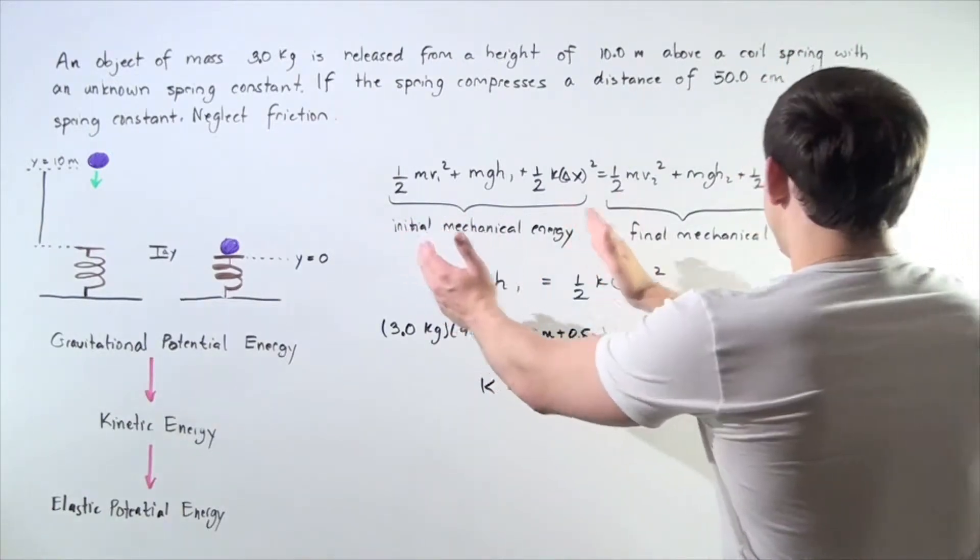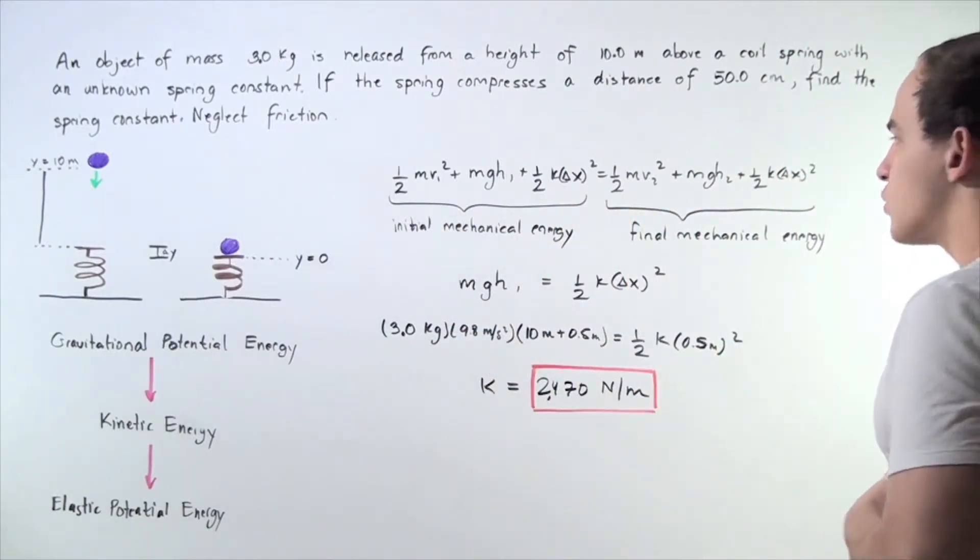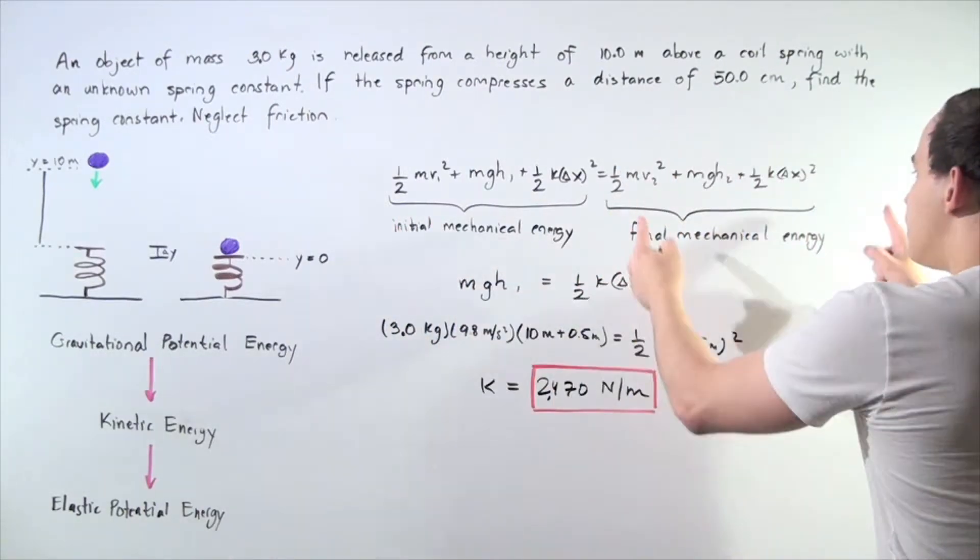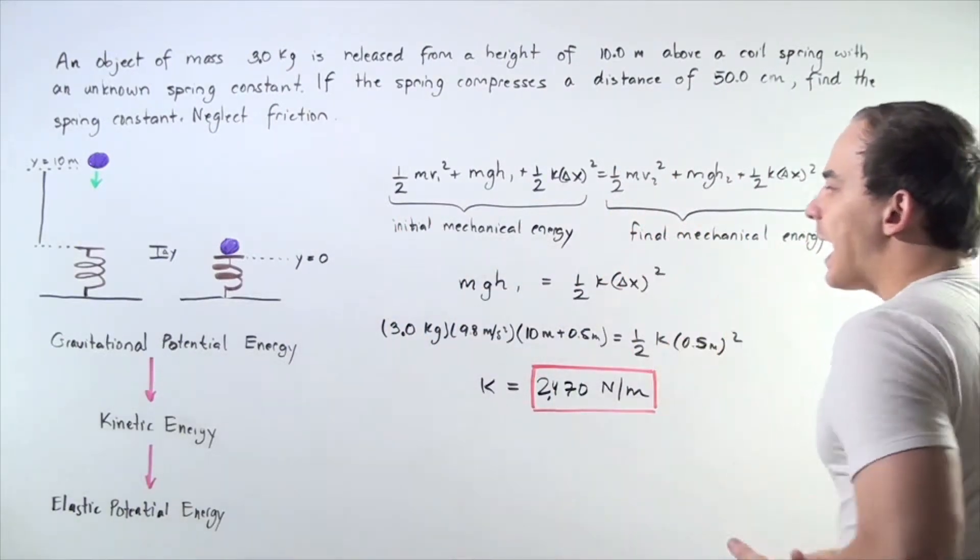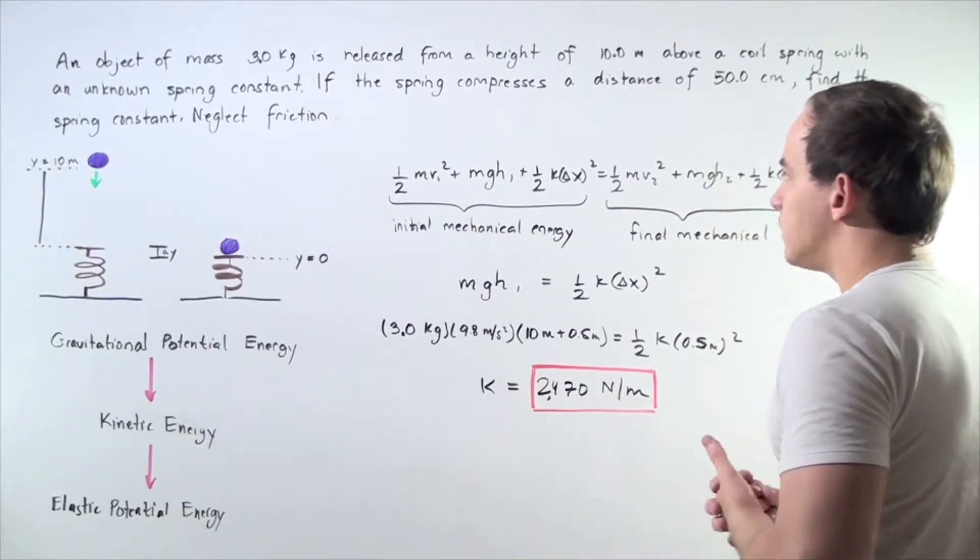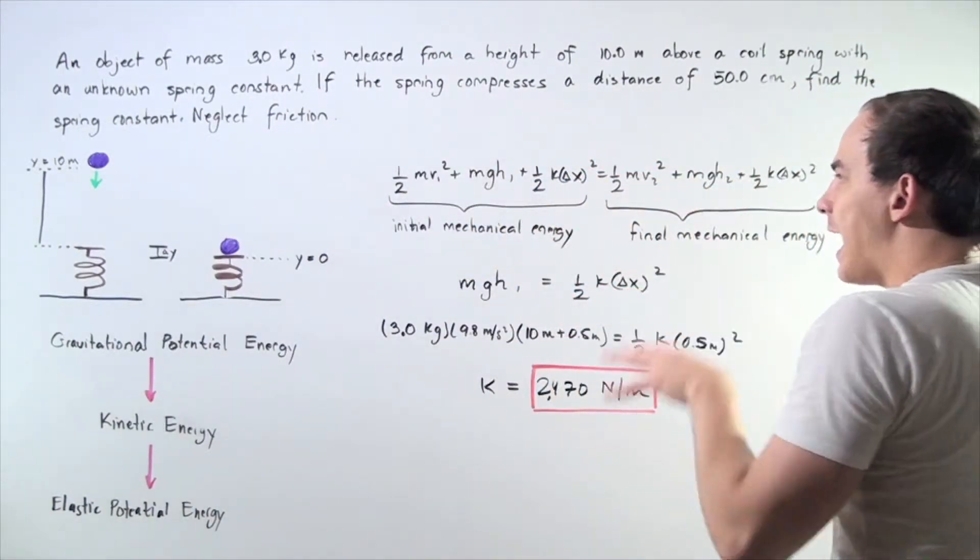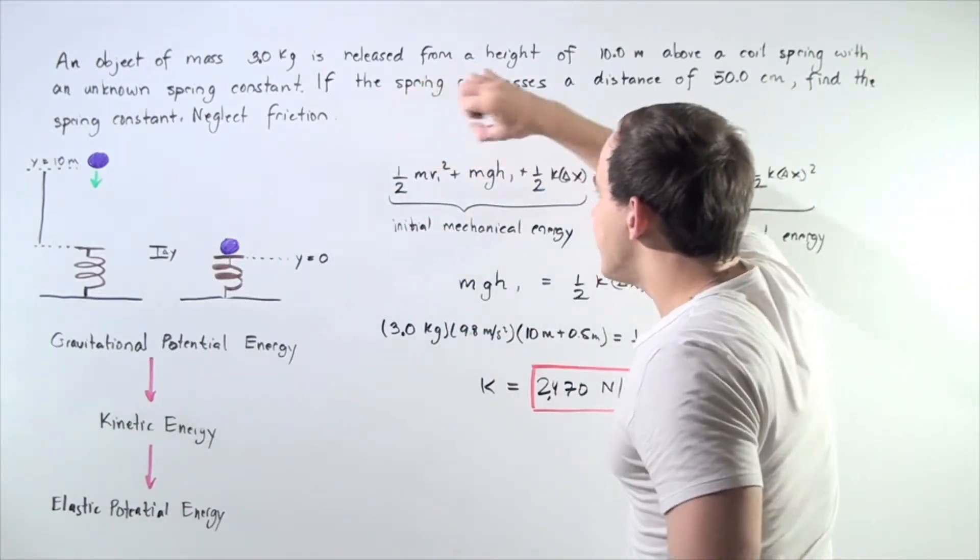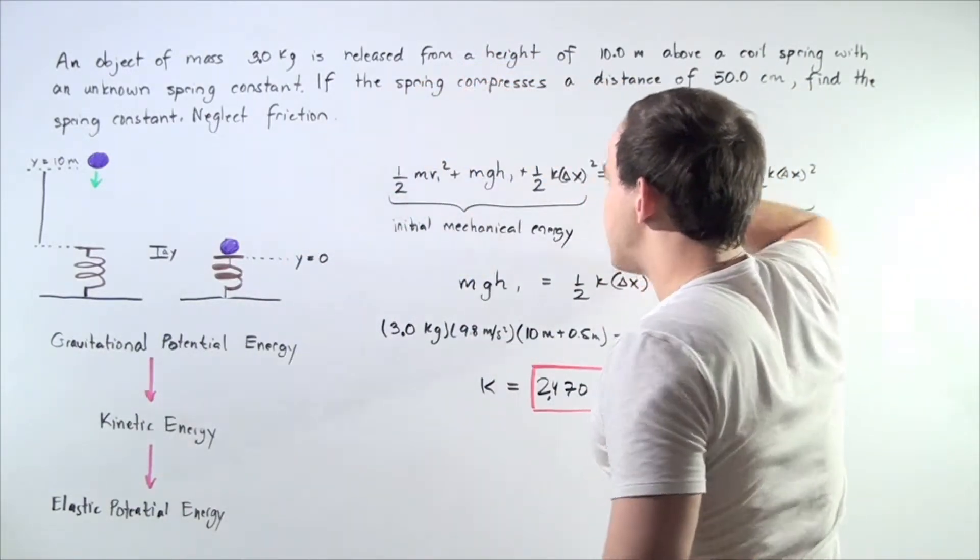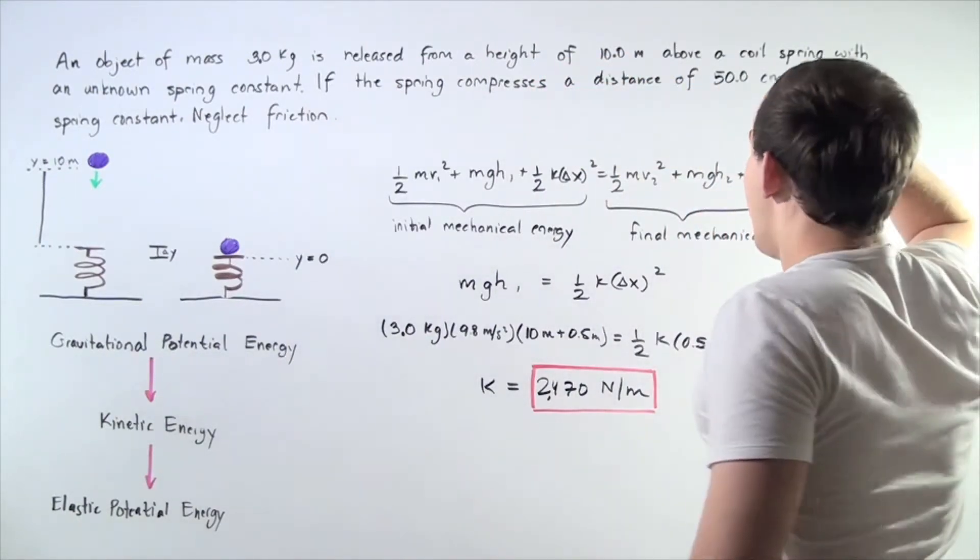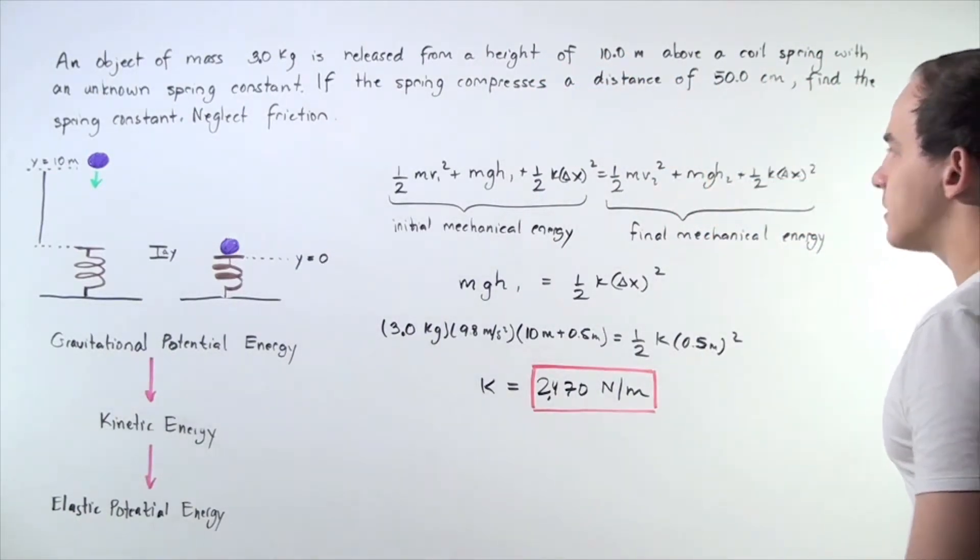Let's solve it using the following formula. We have the initial mechanical energy equals the final mechanical energy, our conservation of mechanical energy. We have three different types of mechanical energy in each case: the kinetic energy, the gravitational potential energy, and the elastic potential energy stored in the spring. The same in the final case.